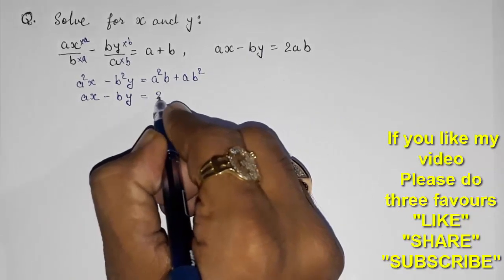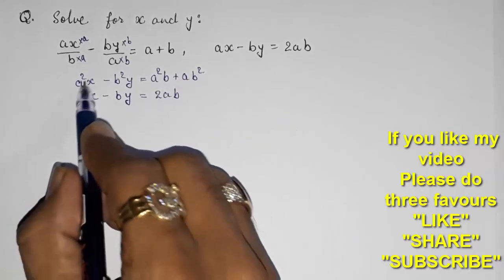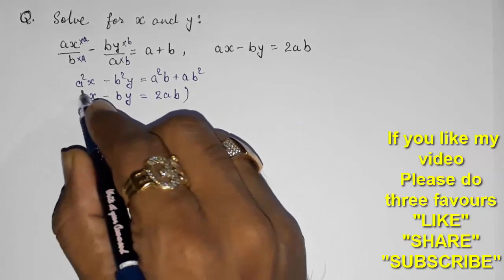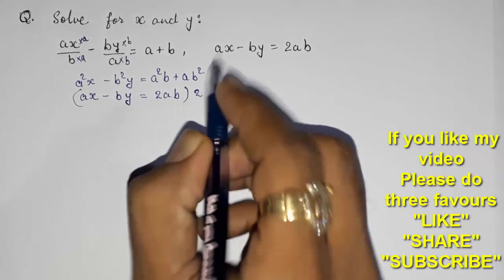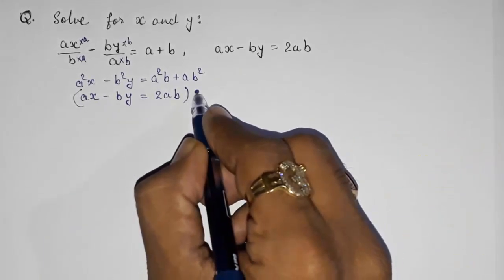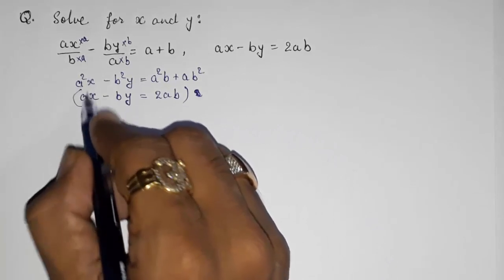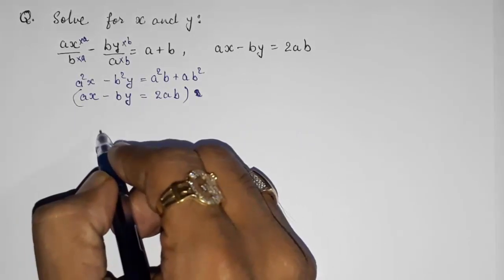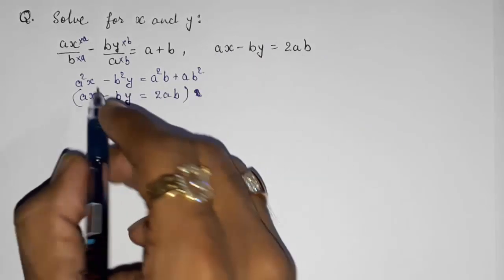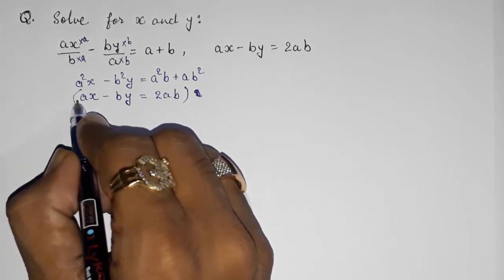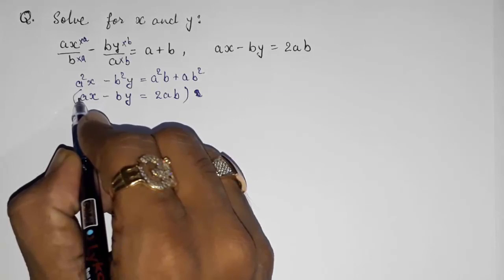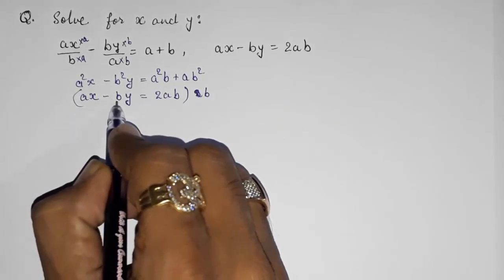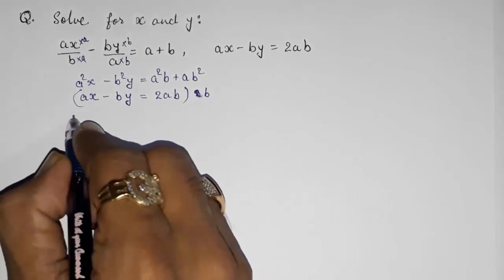These are unlike terms so we cannot add or subtract directly. We first have to make the coefficient of x or y the same by multiplying the second equation by some number. I am going to multiply with b, so the second equation will also get b.